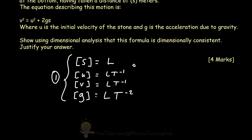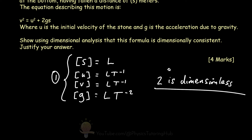To get our second mark for this question, we need to state that this value of two is a dimensionless quantity. It doesn't have any dimensions — it cannot be represented by a length or a time. It's simply a constant. Any number within our equation as a coefficient is a dimensionless quantity, and that's our second mark.